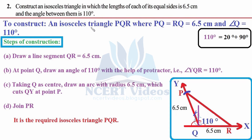The aim is to construct an isosceles triangle as given. We name this triangle PQR where PQ equals RQ — both equal sides are 6.5 cm. To determine where to draw the angle, find the vertex common to both equal sides: that is Q. Therefore the angle of 110 degrees will be formed at Q.